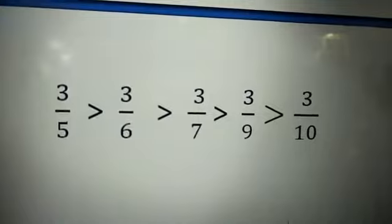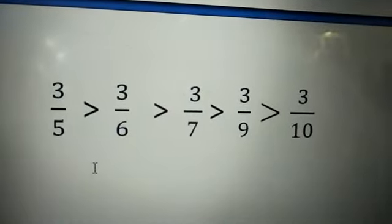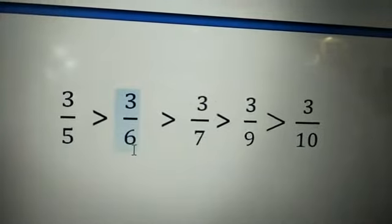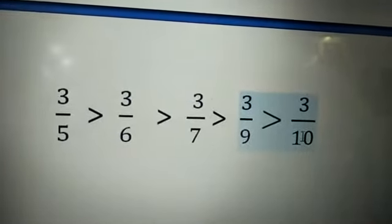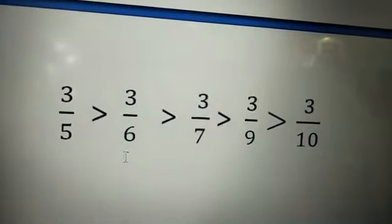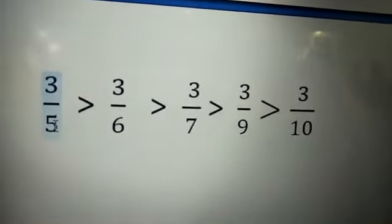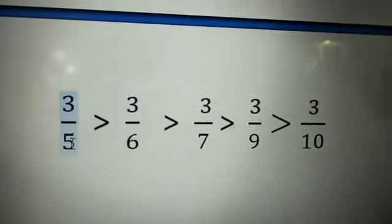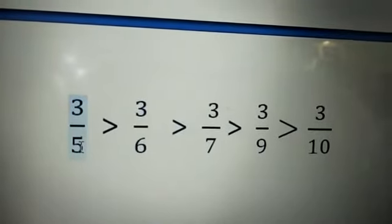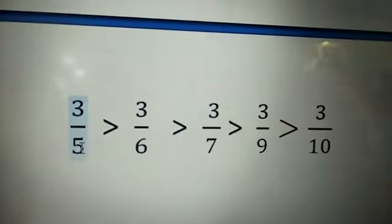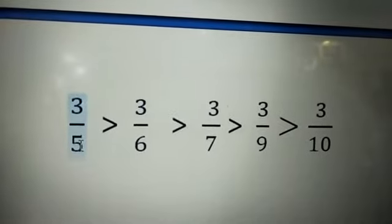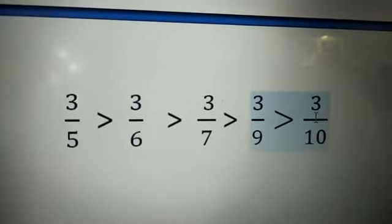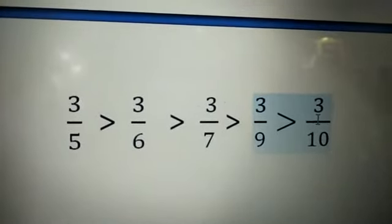You arrange the denominator in ascending order: 5, 6, 7, 9, 10. But descending means we need to arrange from greater to smaller. This is also in order of greater number to smaller number. When we take LCM, we can find it easily.